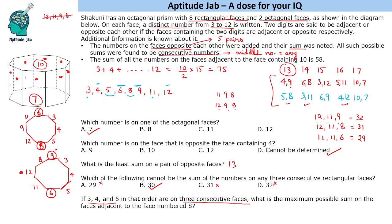In Case 1, the neighbors have a higher sum of 21. But remember, these are rectangular faces — they also have the top and bottom octagonal faces (10 and 7) as adjacent faces. So the face containing 8 has 4 adjacent faces. The maximum sum is 12 + 9 + 10 + 7 = 38. That was the solution to the set and the answers to all questions.